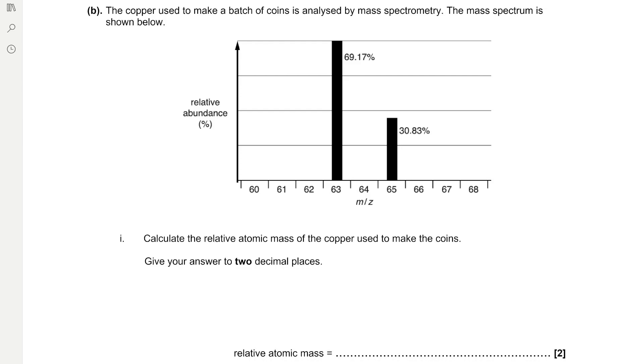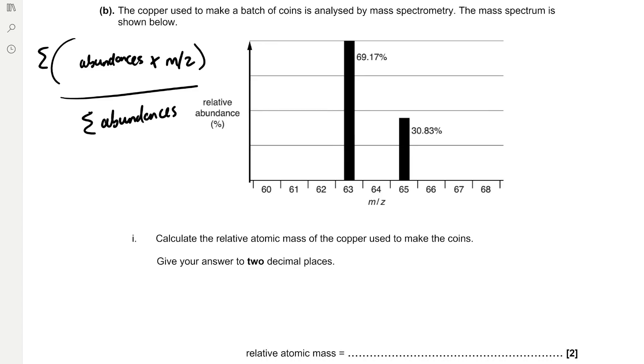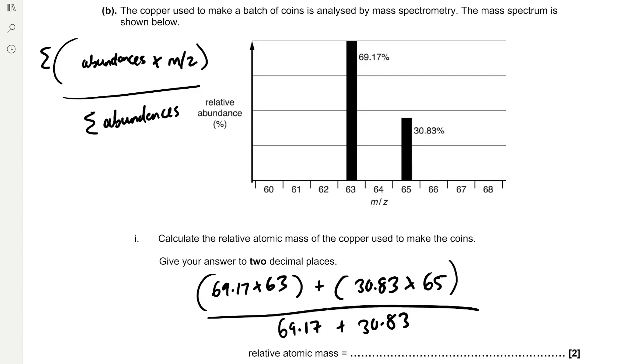The formula is the sum of the abundances multiplied by the m/z values divided by the sum of the abundances. So that gives us 69.17 multiplied by 63 added to 30.83 multiplied by 65 divided by 69.17 added to 30.83. You need to be careful that you don't just assume that the sum of the abundances is 100 because sometimes they try to catch you out. And that leaves us with 63.61 to two decimal places.